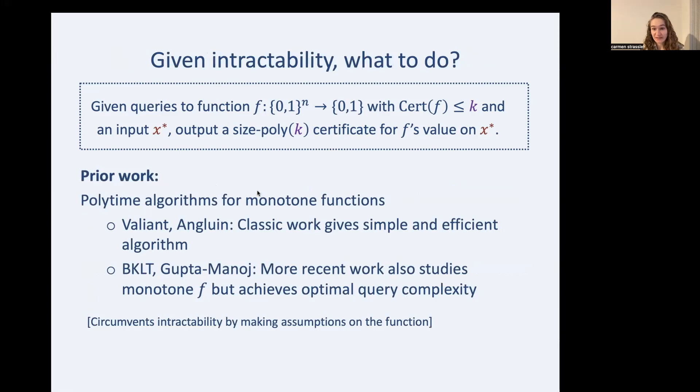So given intractability, what do we do? Prior work has focused on circumventing intractability by making assumptions on the function. In particular, they've made the assumption that the function should be monotone. So Valiant and Angluin give a simple and efficient algorithm for monotone functions. And more recent work, BKLT and Gupta Minaj, also studied monotone f, but they achieve optimal query complexity.